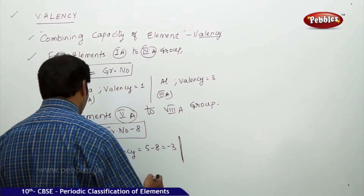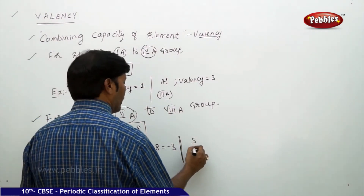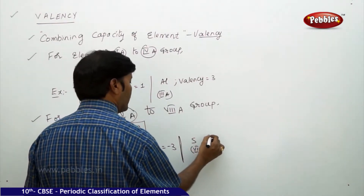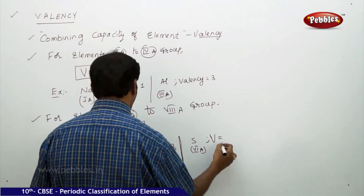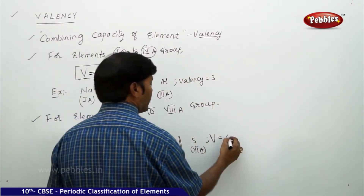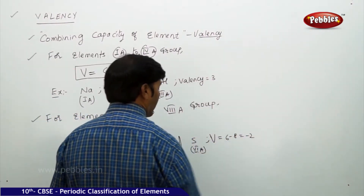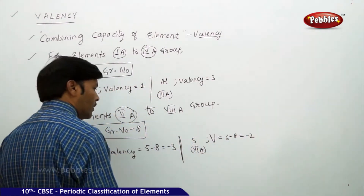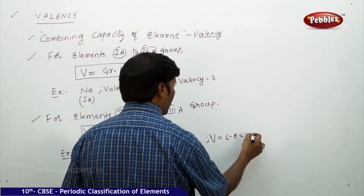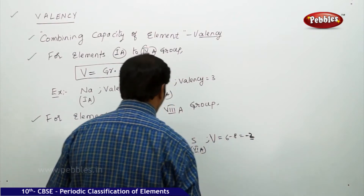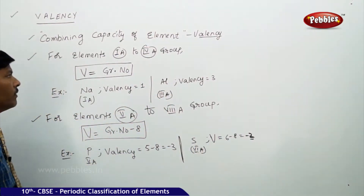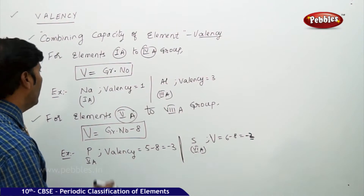Sulfur belongs to group 6A, so its valency = 6 minus 8 = minus 2. Ignoring the negative sign, the valency of sulfur is 2. Like this, you can calculate the valency for various group elements.